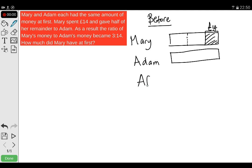After she spent 14 pounds and gave away a certain amount, the bars would look different for both of these people. Mary will have around about that much, and Adam will have the same amount as he previously had, but plus another half of the remainder from Mary.